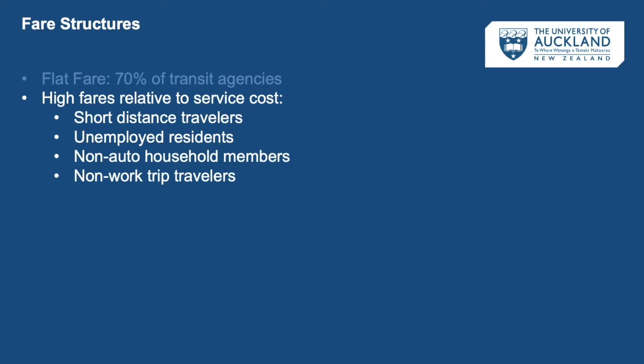Flat fares result in higher costs for short-distance travelers. Those who go two stops pay the same amount as those who go ten stops, meaning the person taking two stops is subsidizing the higher cost of a longer trip. Those who are unemployed typically take shorter trips than those who are employed and take commute trips. Commute trips are typically the longest and most expensive — requiring the most buses and trains operating in the most congested conditions over the farthest distances.